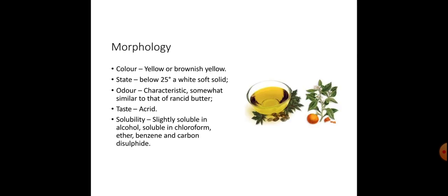Morphology. Colour: yellow or brownish yellow. State: below 25 degrees Celsius a white soft solid is produced. Odour: characteristic, somewhat similar to that of rancid butter. Taste: acrid. Solubility: slightly soluble in alcohol, soluble in chloroform, ether, benzene and carbon disulfide.